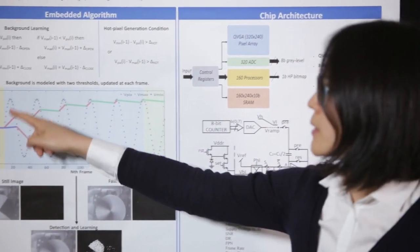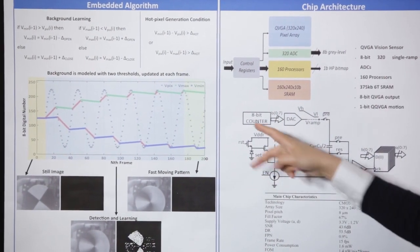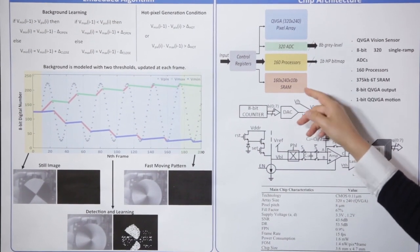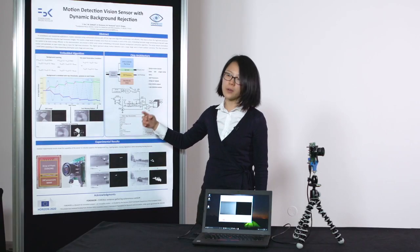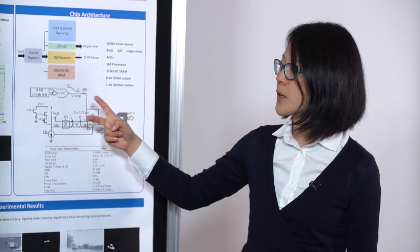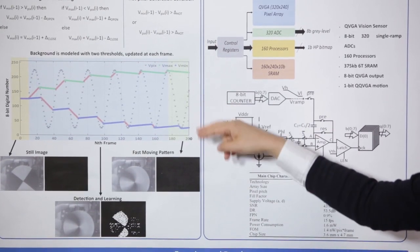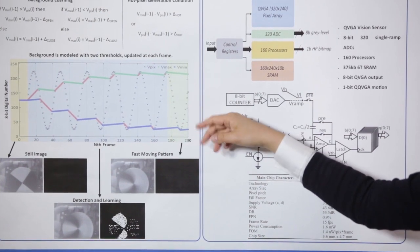So we compare our signals, the black line here, with two different thresholds. The thresholds are stored inside SRAM. So every time, each frame, the signal is going to compare with two thresholds, two boundaries here. The boundaries will update its value depending on the values of the signals.